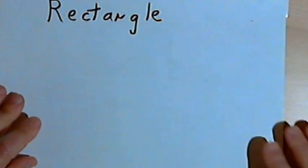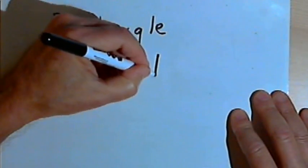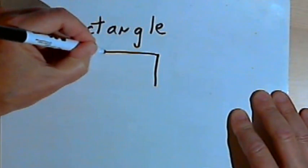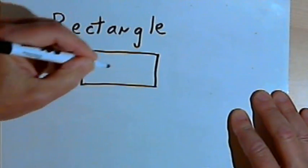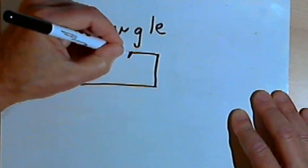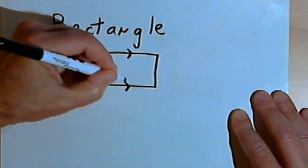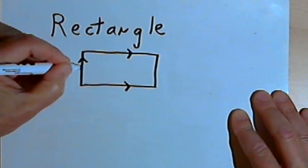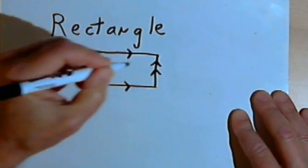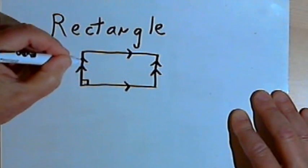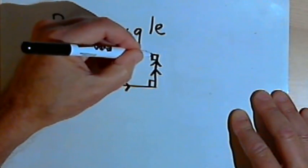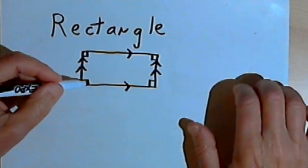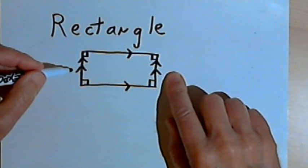Let's go on to a rectangle. A rectangle is another kind of parallelogram, actually. So a rectangle is a parallelogram with two pairs of parallel sides, and all of the angles are right angles. What makes a rectangle different from other parallelograms is the fact that all of the angles are right angles.